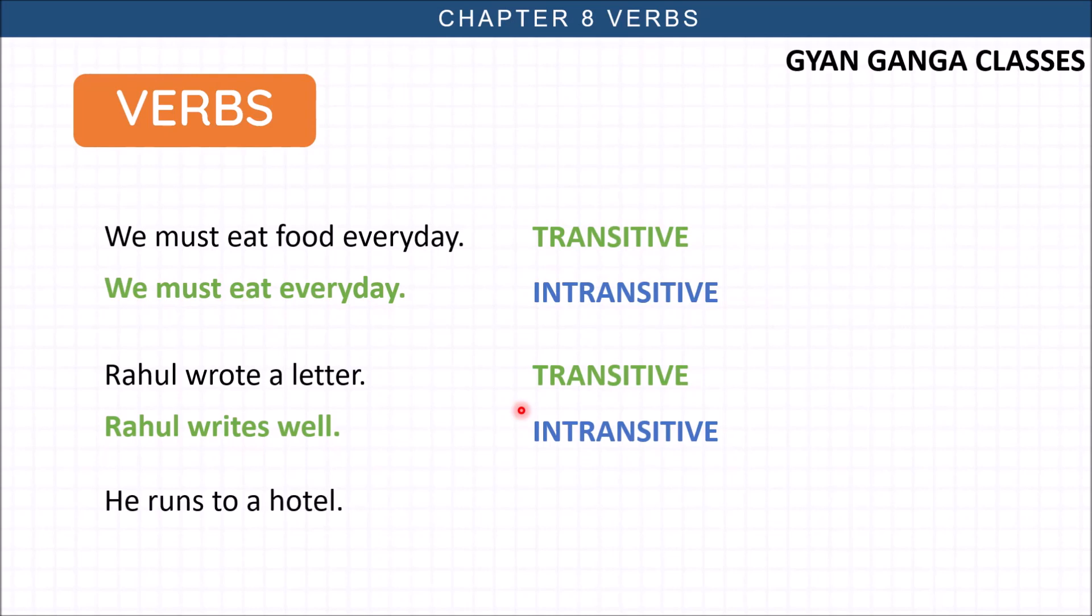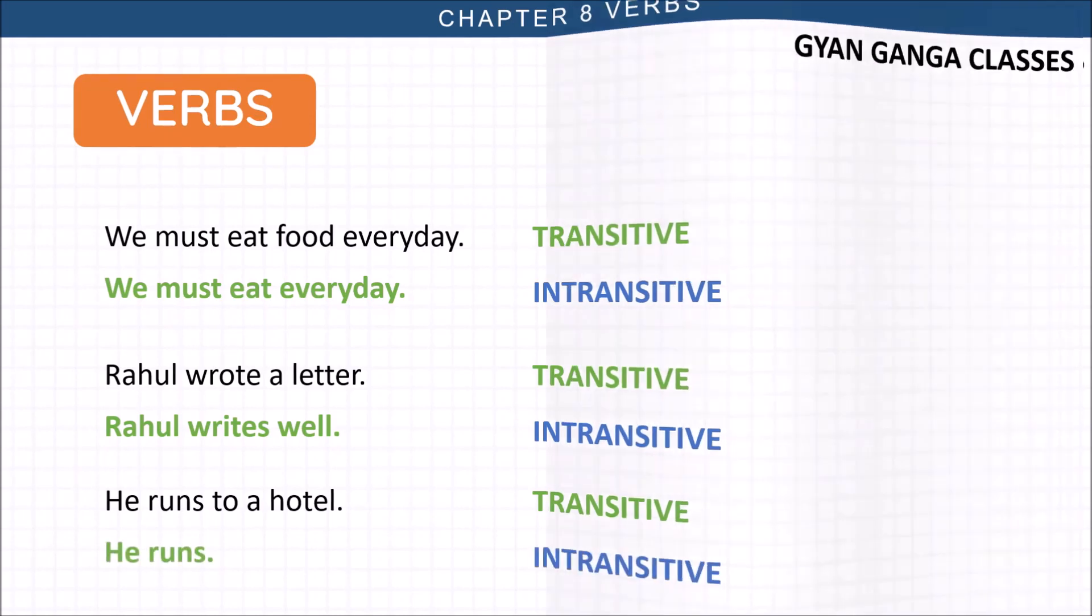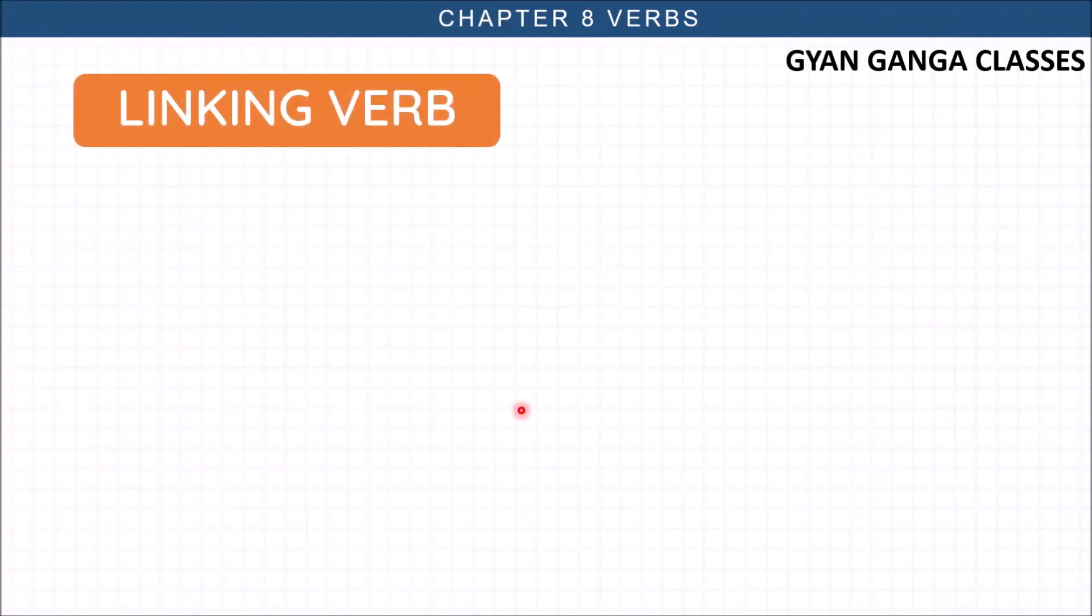Now let us learn about the linking verb. The verb that appears neither transitive nor intransitive. I am happy - basically these are the modal verbs or helping verbs. Am is neither transitive nor intransitive, they are the linking verbs. He looks dangerous. Here look is a linking verb.